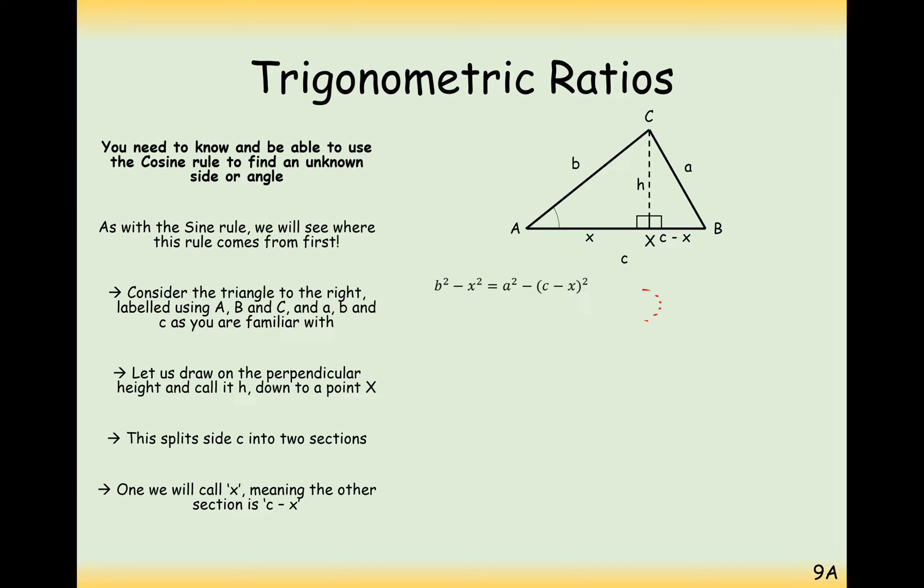Let's have a look now at expanding this. What we need to do then is expand our double brackets properly and then take away everything from inside this bracket here. And what we'll see is we have a negative X squared on both sides. So we can cancel out those. And now we've just got B squared equals A squared minus C squared plus 2CX.